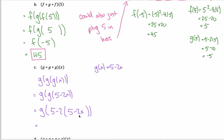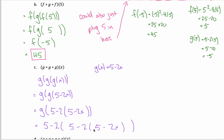In the last step, I'm taking machine g and putting this whole mess into it — copying the blueprint where the output is 5 minus 2 times something, replacing x with everything in the previous parentheses. So g of g of g of x is 5 minus 2 times the quantity 5 minus 2 times the quantity 5 minus 2x.